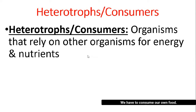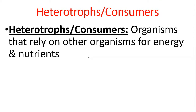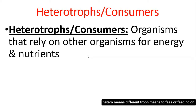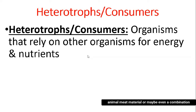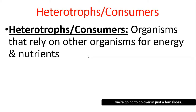However, like us, or your dog or your cat, we can't produce our own food — we have to consume it, so we're consumers. The more formal name for us is heterotrophs. Hetero means different, and trof means to feed. So we're feeding on different organisms for energy and nutrients — whether that's plant material, animal material, or maybe a combination of both. There are different levels of consumers that we'll go over in just a few slides.